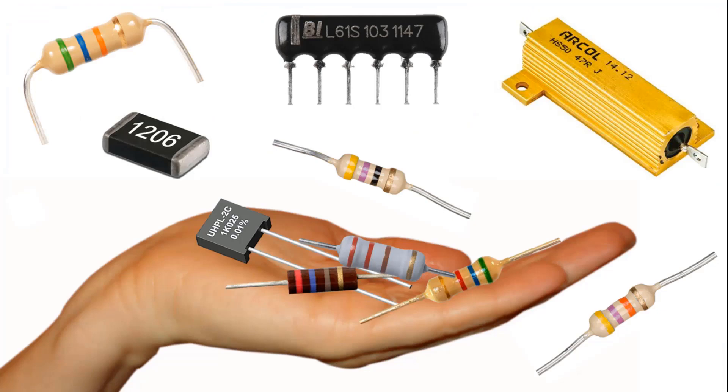All of the resistors you see in the figure are fixed resistors. The values of these resistors do not change with the environmental effects and are used to fix the circuit current at a certain value. The reason of the different structures is that the current intensity of the circuit to be used is different.